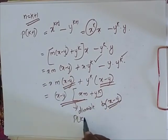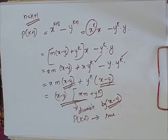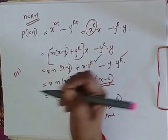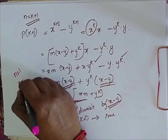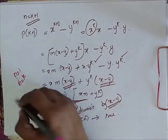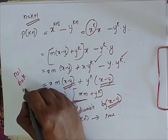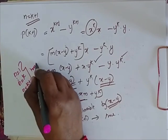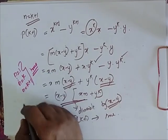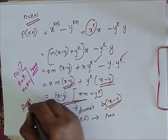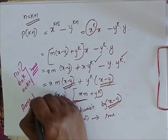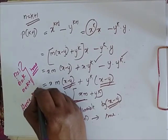So now we have proved that for n is equal to 1 it is true, for n is equal to k it is true, and for n is equal to k plus 1 it is true. Hence, we conclude that it is true for all values of n greater than or equal to 1.